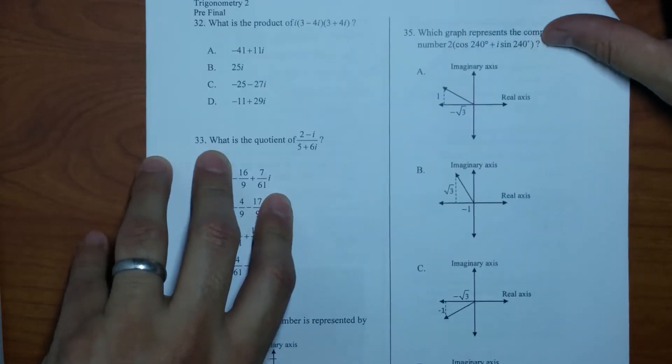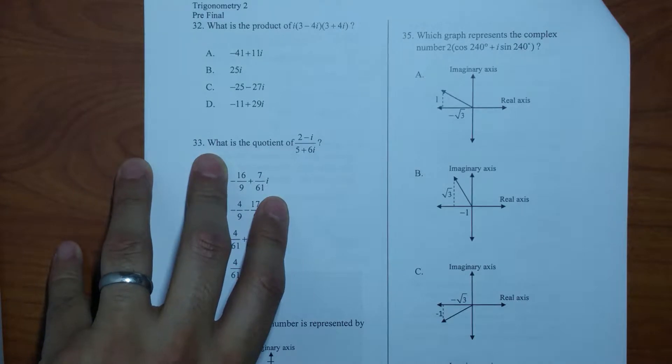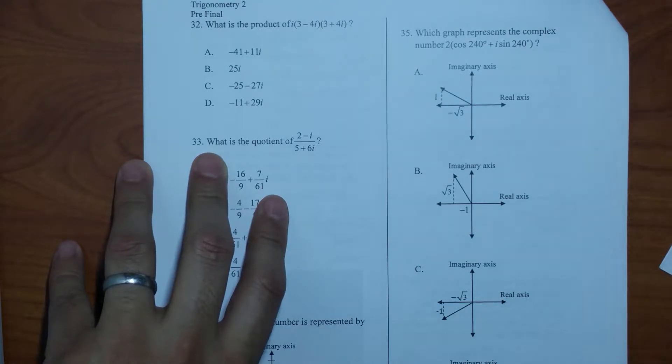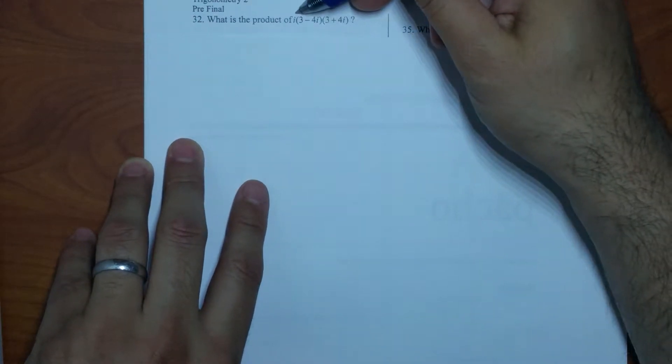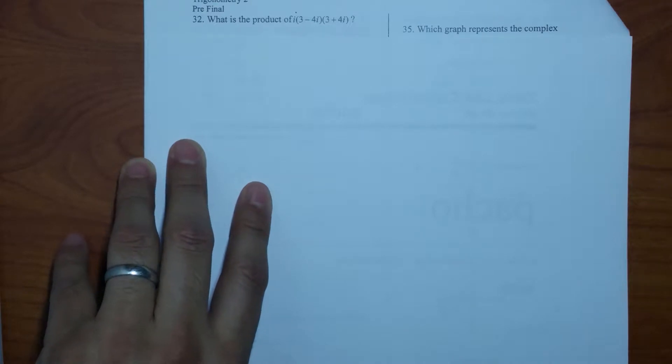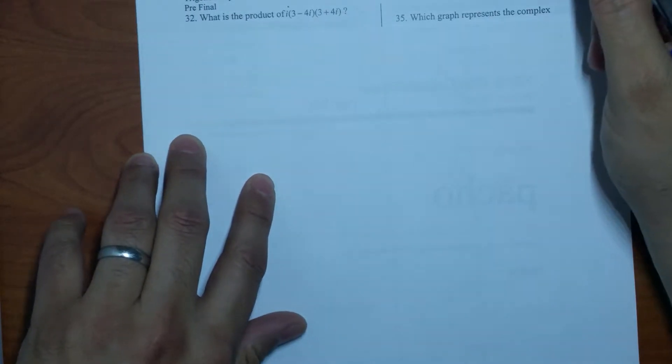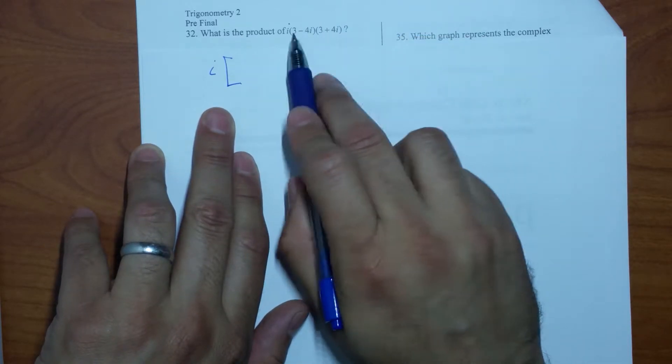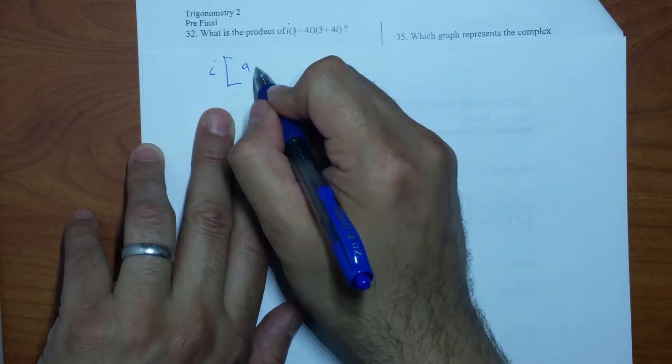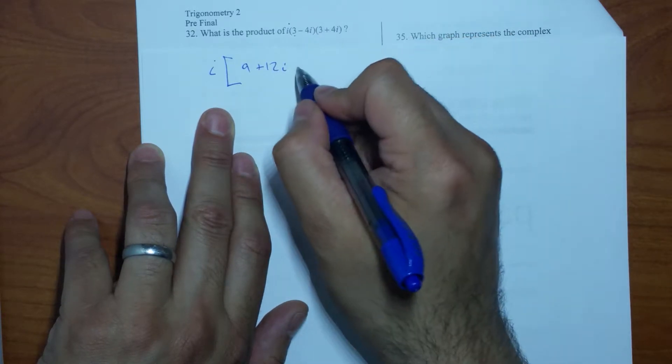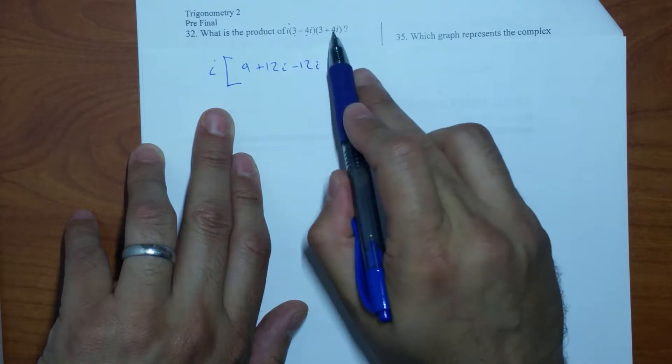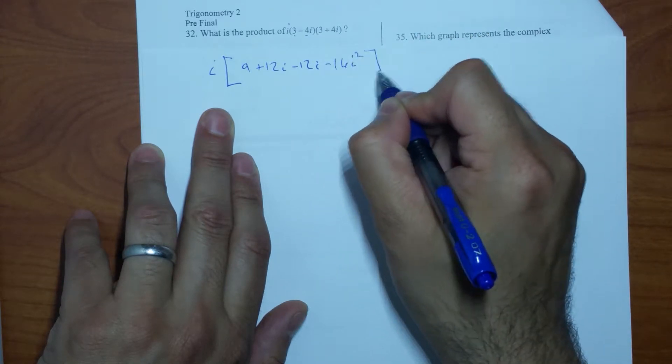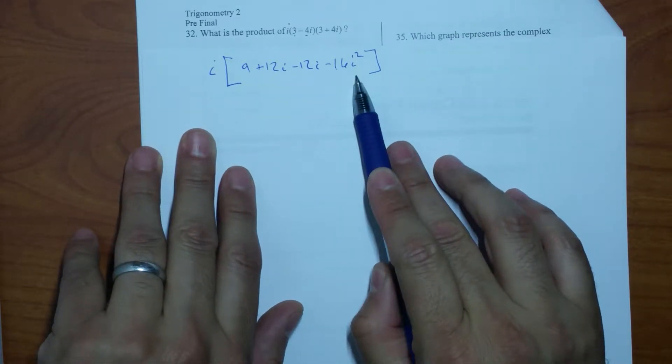For number 32, this is the one that everyone loved so much because it was on the short answer test and everyone forgot the i that was in the front. See that i right there in the front? So what are we going to do? We're going to factor this first and then multiply by i. So I'm going to have the i out here and on the inside we're going to FOIL it. So 3 times 3 is 9, 3 times 4i plus 12i, negative 4 times 3 negative 12i, and negative 4i times positive 4i negative 16i squared.